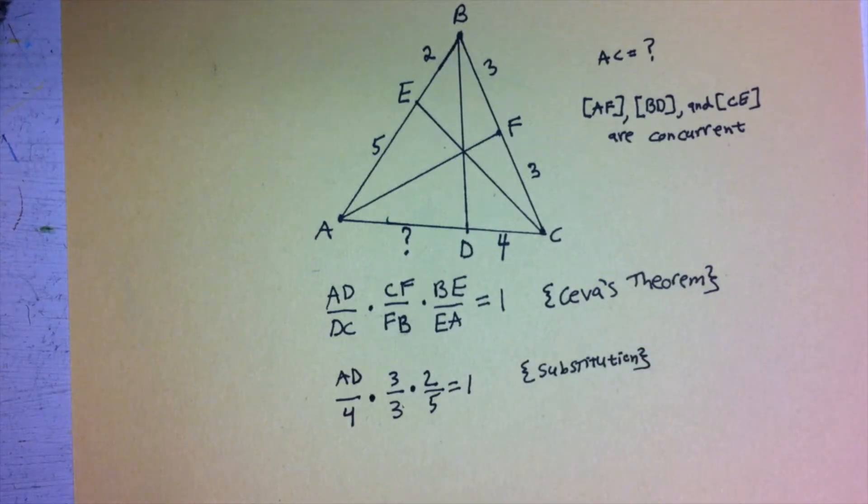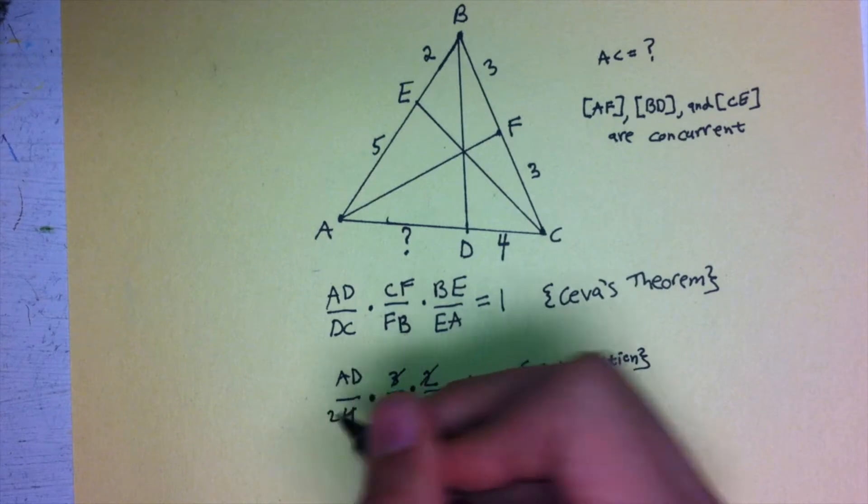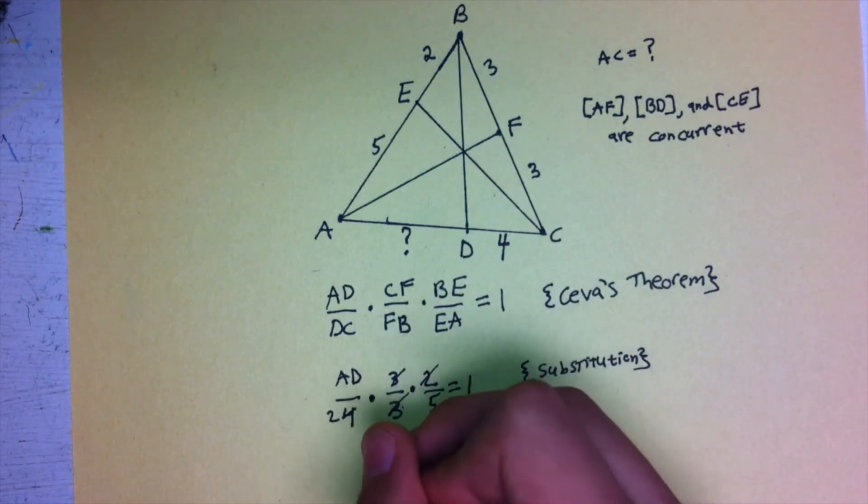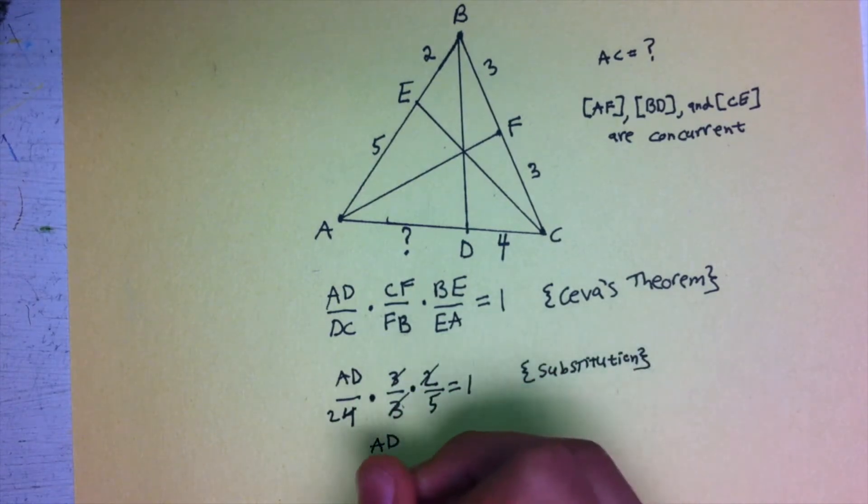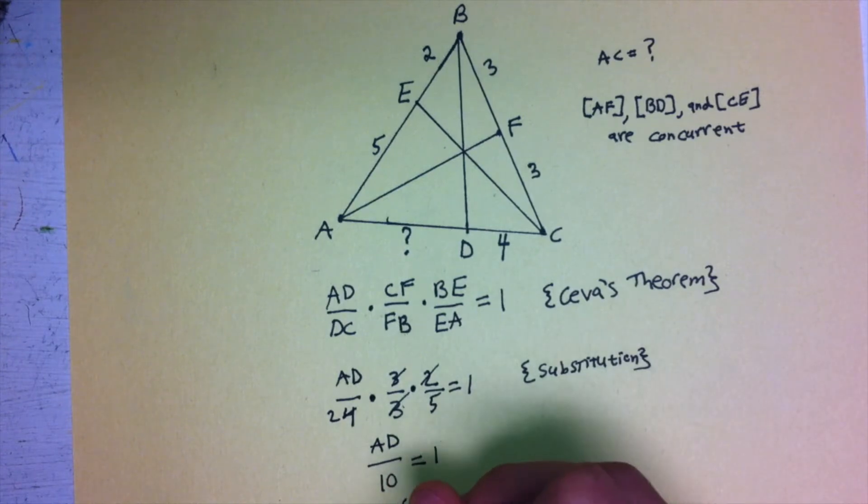So now we can simplify. Those two are going to cancel. That's going to cancel to just give us 2 on the bottom, so AD divided by 10 equals 1. Therefore, AD equals 10.